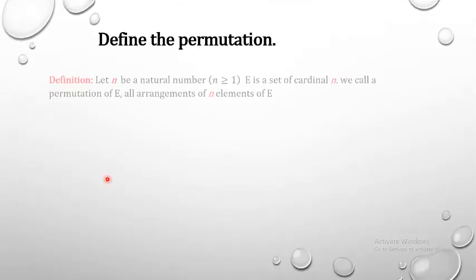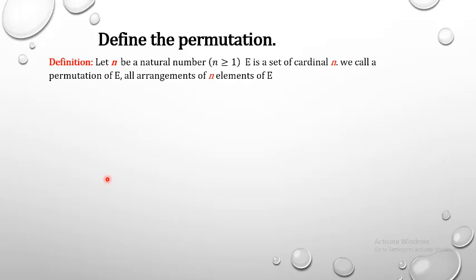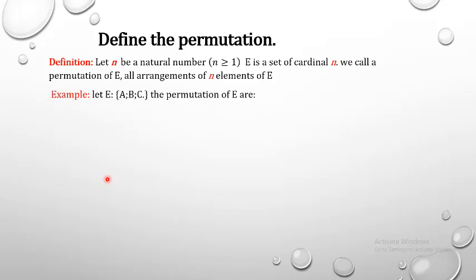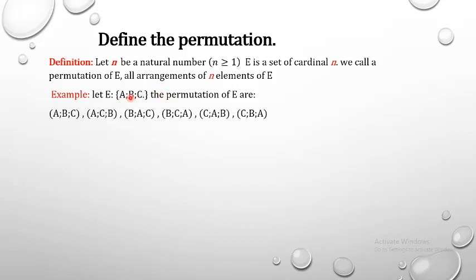Definition of the permutation: let n be a natural number greater than 1, and E be a set of cardinal n. We call a permutation of E all arrangements of n elements of E. For example, the set E = {a, b, c}. The permutations are all cases of arranging a, b, c: there are six cases — abc, acb, bac, bca, cab, and cba.